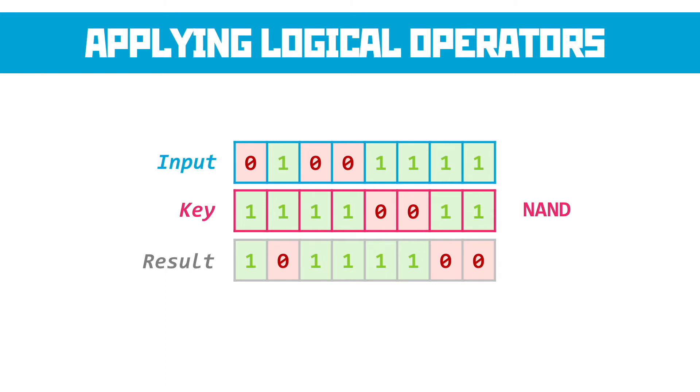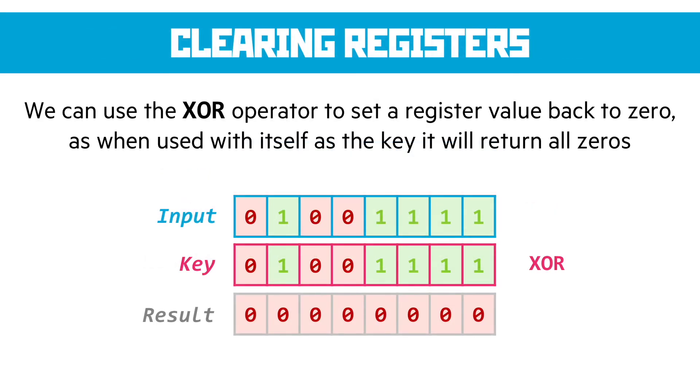And we can use that to clear registers because the XOR operation, for instance, can be used to set an entire register back to zero very quickly. When you use the XOR operator with the same input and key, it always returns a full set of zeros as a result. So it's a very quick and easy operation to perform to set the entire value to zero without having to perform individual addressable changes.